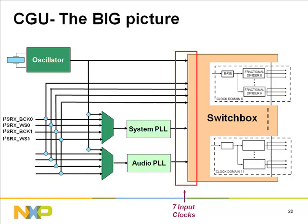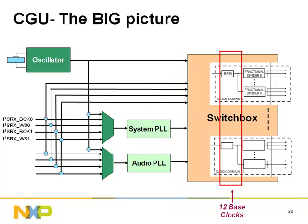The switch box generates 12 base clocks. Each clock generated by the CGU is derived from one of these base clocks and optionally divided by a fractional divider. The base clocks then generate 92 module clocks. There are two main stages in the switch box: selection stage and spreading stage.